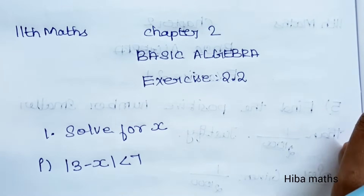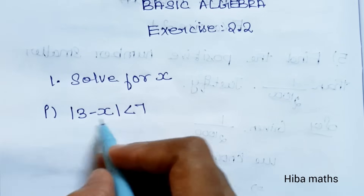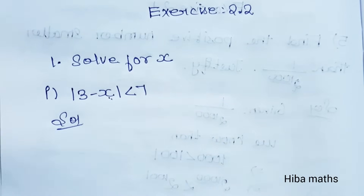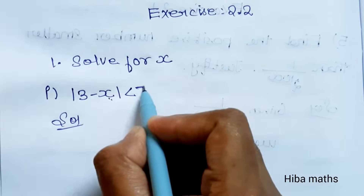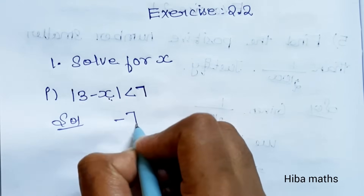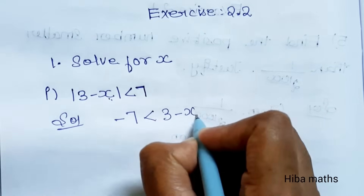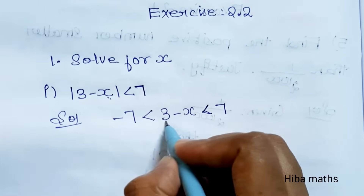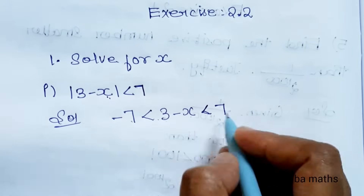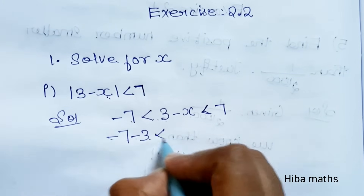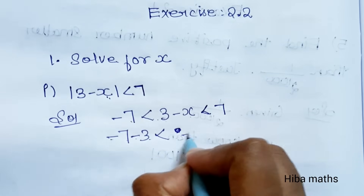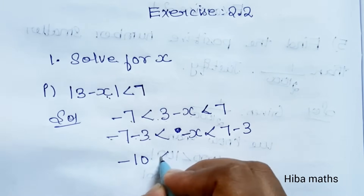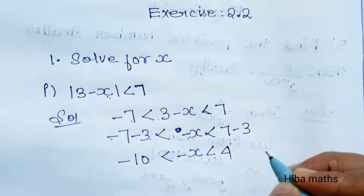Solution: 4x has 4 subdivisions. Subdivision 1: Modulus of 3 minus x is less than 7. Now, what is the x value? We expand: minus 7 is less than 3 minus x is less than 7. Subtracting 3 throughout: minus 7 minus 3 gives minus 10, and 7 minus 3 gives 4. So, minus 10 is less than minus x is less than 4.